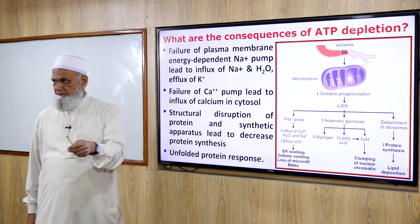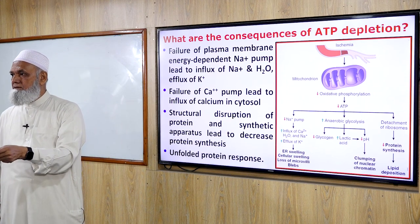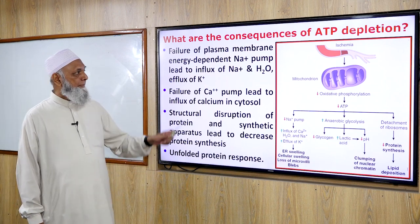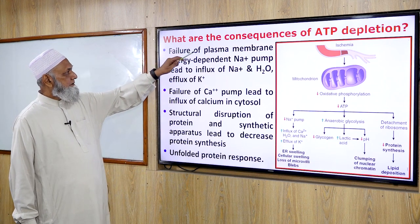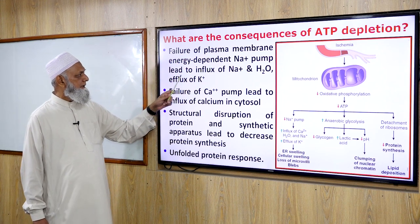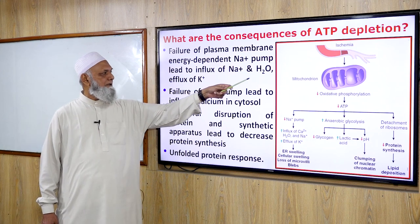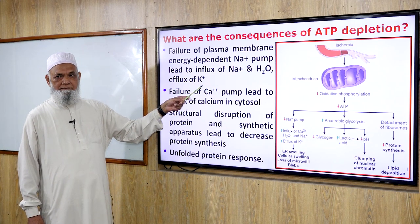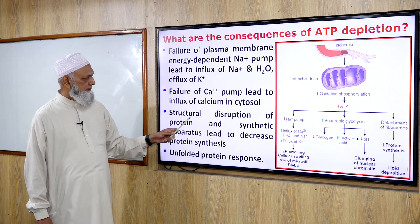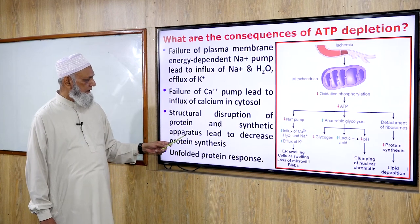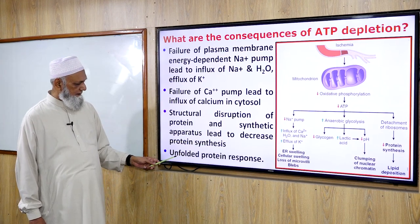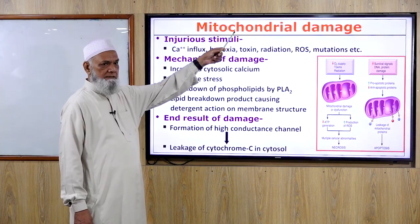Consequences of ATP depletion: failure of plasma membrane energy-dependent sodium pump leads to influx of sodium and water and efflux of potassium. Failure of calcium pump leads to influx of calcium into the cytosol. Structural disruption of the protein synthetic apparatus leads to decreased protein synthesis, unfolded protein response, and mitochondrial damage.